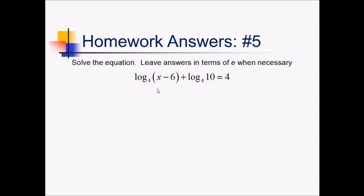On this problem, I have more than one log on one side of an equation. So I'm going to merge those into a single log using log rules. Since I'm adding these logarithms, that means I'm multiplying the 10 and the x minus 6 that are inside. So I can rewrite the left side as log base 4 of 10x minus 60 still equals 4.